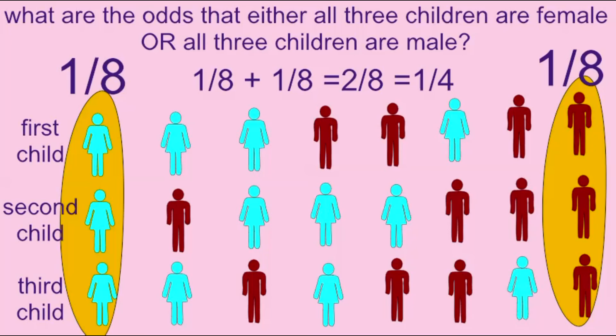So, there is a 1 in 4 chance in families which have three children that either all three will be female or all three will be male.